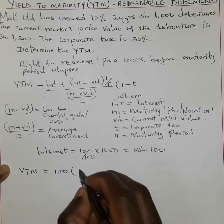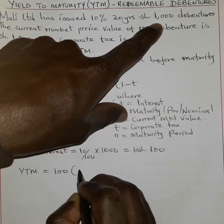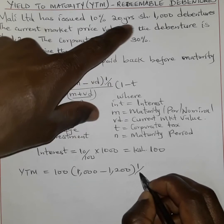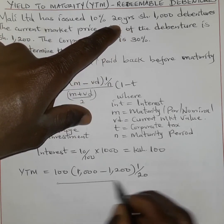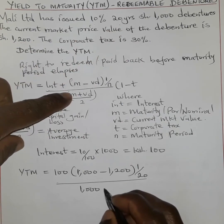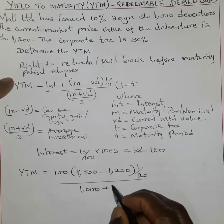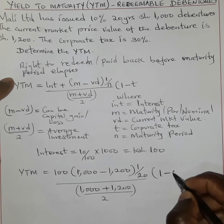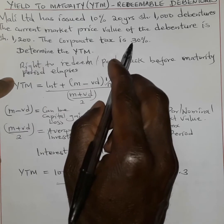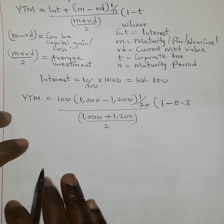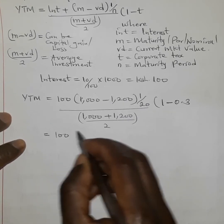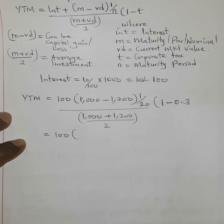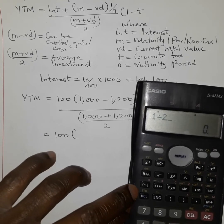Now we substitute everything into the yield to maturity formula. We have: 100 plus (M minus VD), where M is 1000 and VD is 1200, so M minus VD is negative 200. This is multiplied by 1 over n, which is 1 divided by 20 = 0.05. So 0.05 times negative 200 gives negative 10.